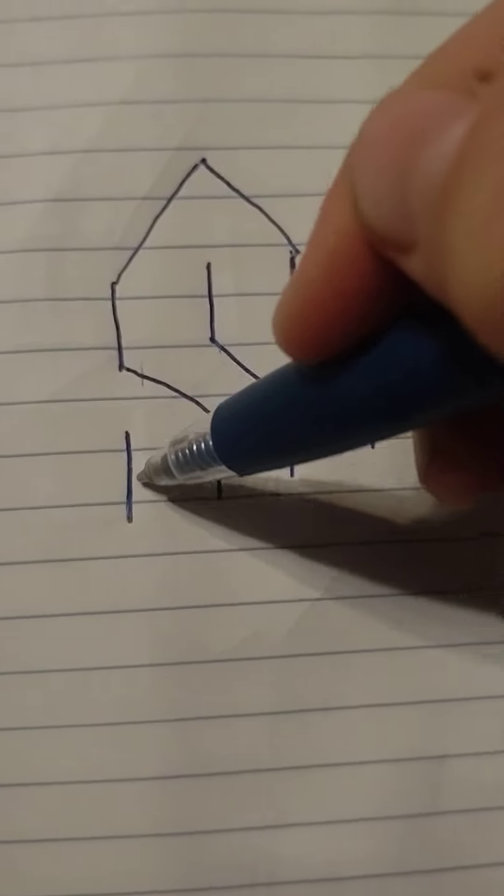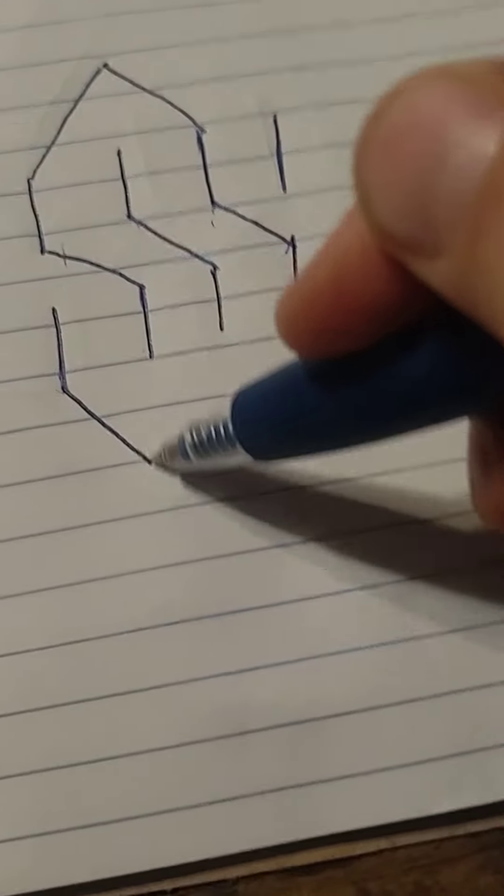And then you start on this line, so if you look up top, it's right here. So this line, right next to it on the outside, you come down and line it up with that. And then you start from here and connect it like that. So it's going to look like an S.